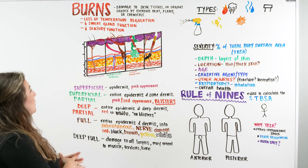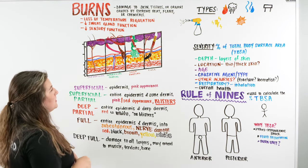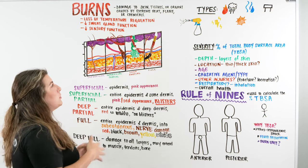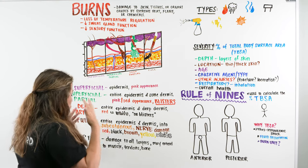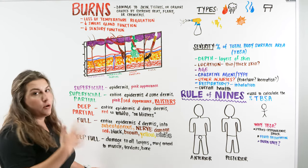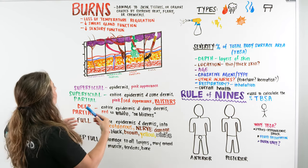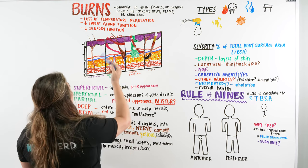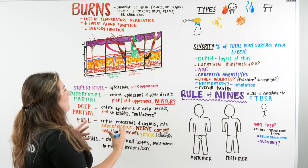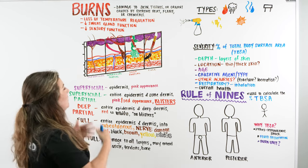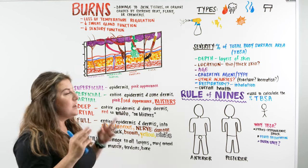With burns, we're going to be focusing on typically the damage to the skin, the tissues, or the organs that are caused by either extreme heat, flame, or even chemicals. What we're concerned about typically with burns is that when we affect the skin and the underlying tissues, we're going to have problems with a loss of our temperature regulation, a decrease in our sweat gland function and sebaceous gland function, and even our sensory function is going to be impeded.